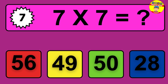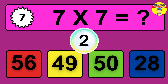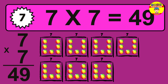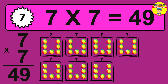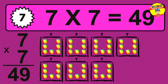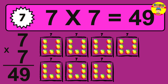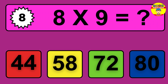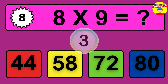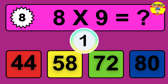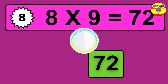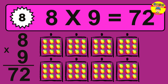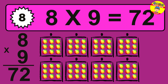Question 7. 7 times 7 equals what? The answer is 7 times 7 is 49. To calculate, we have 7 groups with 7 balls each one. Question 8. 8 times 9 equals what? The answer is 8 times 9 is 72. To calculate, we have 8 groups with 9 balls each one. So how many balls do we have? 72 balls.